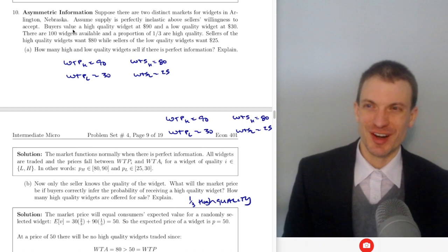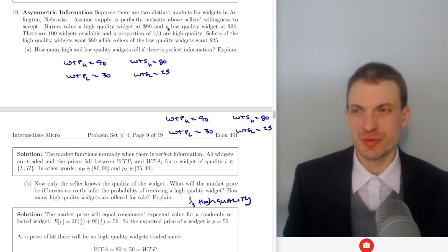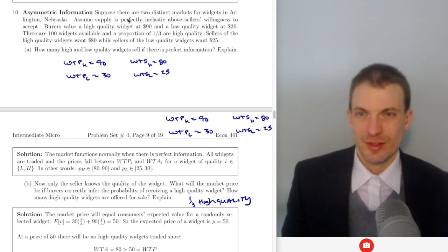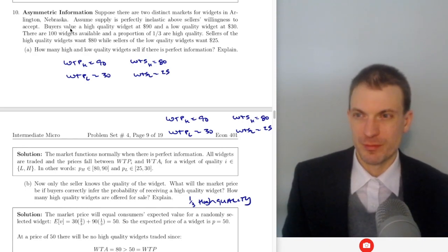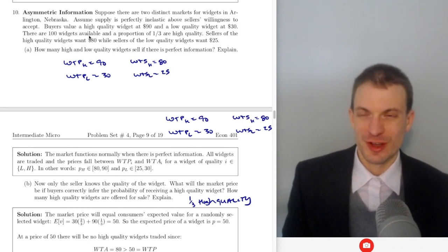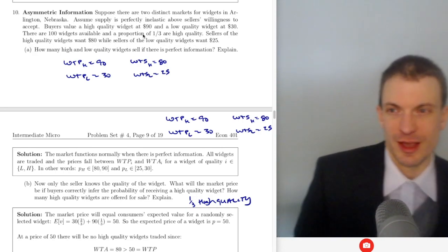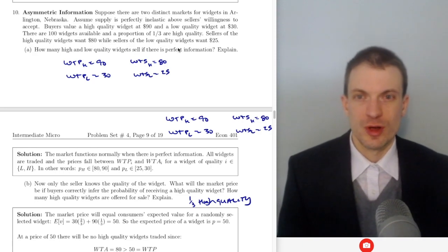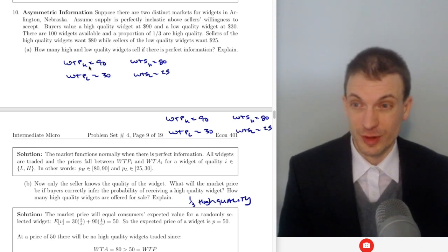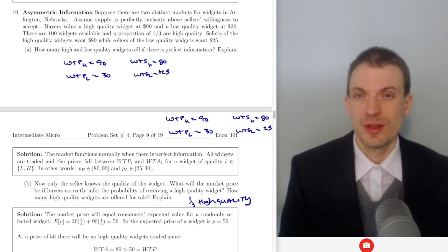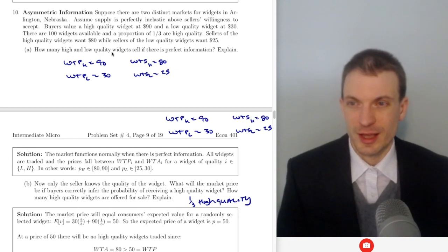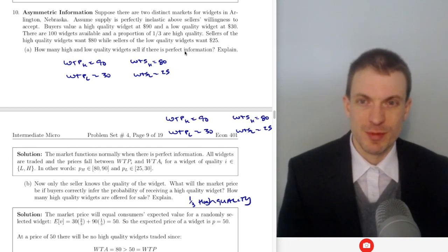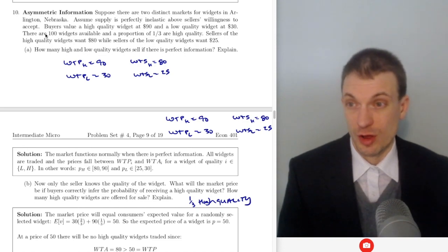Assume there are two distinct markets for widgets in Arlington, with perfectly inelastic supply above the seller's willingness to accept. Buyers value a high quality widget at $90, low quality at $30. There are 100 widgets available; a third of them are high quality. Sellers of high quality want $80, sellers of low quality want $25. With perfect information, all 100 widgets trade at prices between the respective reservation prices.